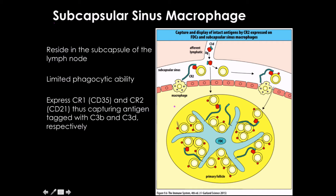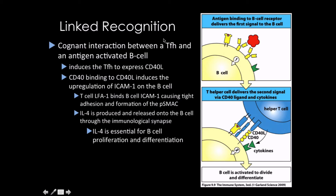It's not just follicular dendritic cells involved in antigen fishing for presenting intact antigens to B-cells. Subscapular sinus macrophages also reside in the subscapular region of the lymph node and are, for these purposes, basically a smaller version of follicular dendritic cells. Both follicular dendritic cells and subscapular sinus macrophages have limited phagocytic ability because B-cells need a totally intact antigen to interact with. CR1 and CR2 increase their ability to do this antigen fishing.